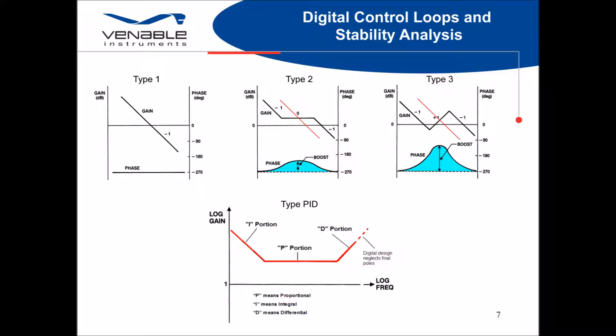For the digital compensator stage, we have the same type 1, type 2, and type 3 implementations that we have in the analog solution. However, we add a new type — the proportional, integral, differential — to this mix. For the PID, as shown here, we have our first segment with a pole at the origin. This is the integral portion of the transfer function. The second segment is the proportional, and the third segment is the differential portion of the transfer function.